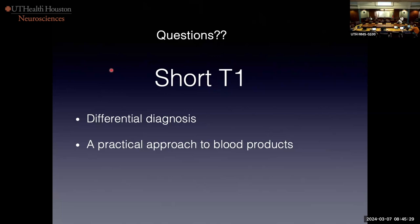Follow-up question: is there evidence from small animal studies that 7T causes cell death? I don't know the answer to that. There would be tissue heating, and it probably depends on the engineering and the pulse sequences. Maybe we can decrease heating — if you've got a deep brain stimulator in, there are certain sequences we will not run; we go into what's called a low SAR mode. It probably has less to do with the high field than with what sequences they're running.